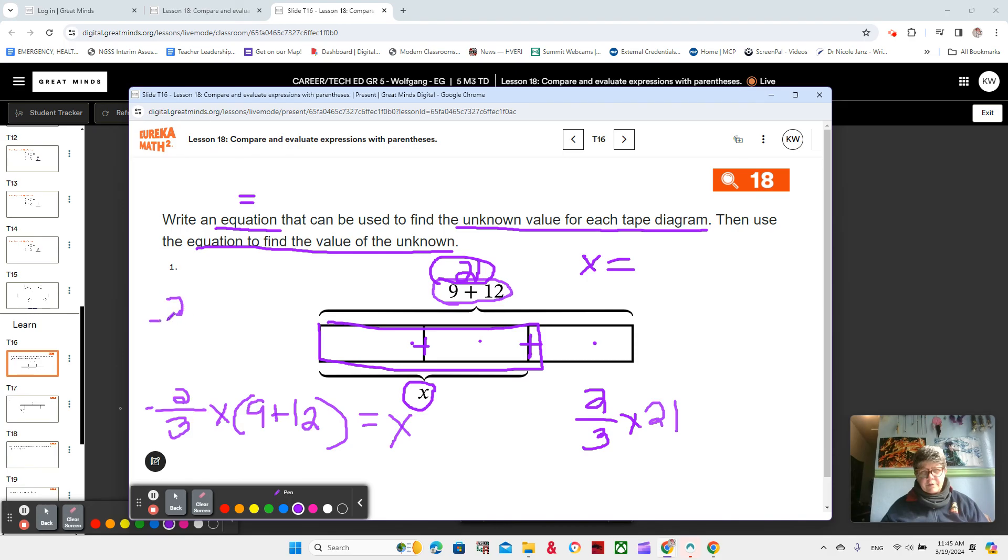What if I didn't have parentheses here? What if I just had two-thirds of 9 plus 12? Would that be the same? Would that have the same value? No, it wouldn't, because we would do two-thirds of 9, and then we would add 12 on, right? And two-thirds of 9 is 6, and 6 plus 12 is 18. So we'll just keep that there, and then when we solve this one, we can compare them.